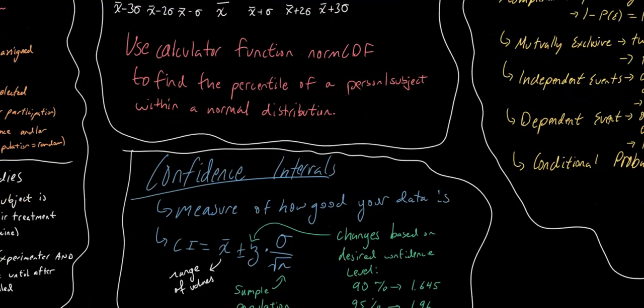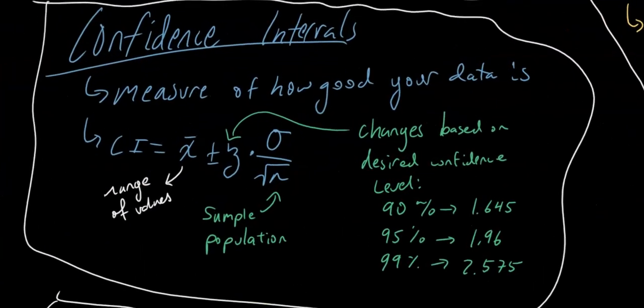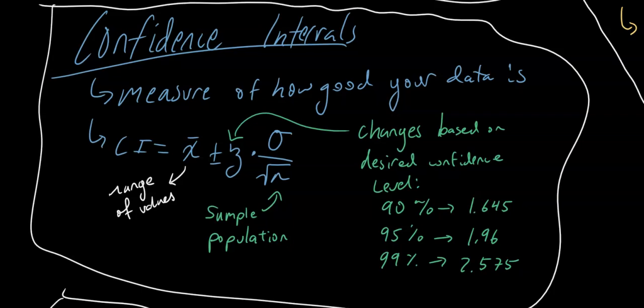We have a few more equations to go over before we move on to probability. First thing is confidence intervals. A confidence interval is a measure of how good your data is, and it can be calculated using this equation: CI is equal to the mean plus or minus z times lowercase sigma over the square root of n, where n is your sample population and z changes based on what your confidence level is. If you want to find a confidence level of 90%, you'd use 1.645; 95%, 1.96; and 99%, 2.575. These three values must be memorized for your regents exam, and there is no way around it.